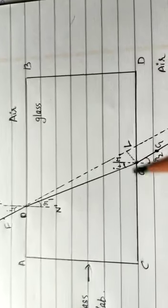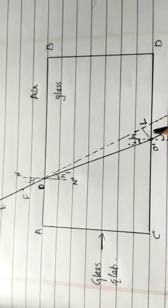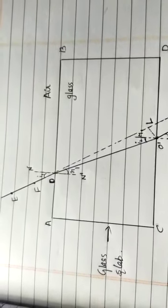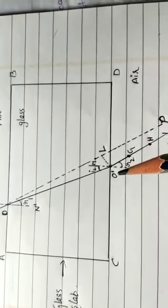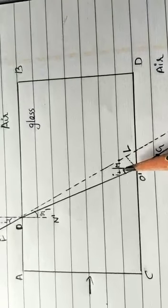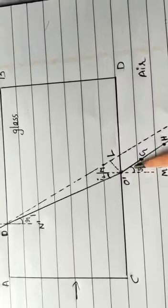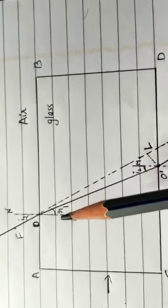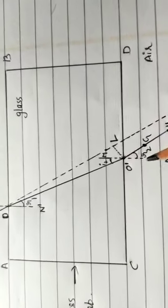At point O', the light ray has entered from rarer medium to denser medium, that is air to glass, and the light ray has bent towards the normal. At O', the light ray travels from glass to air, that is from denser to rarer medium, so the light bends away from the normal. In this case, i2 is the angle of incidence and r2 is the angle of refraction, where i2 is less than r2. Refracted ray away from normal means r2 is greater; towards normal means r1 is less.